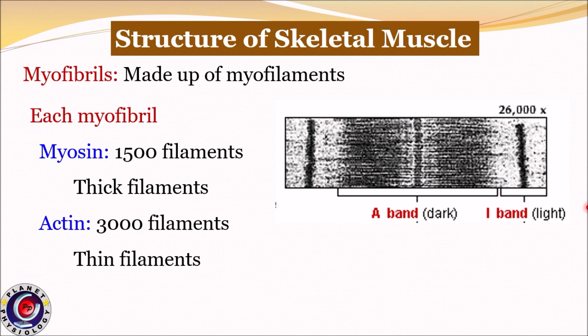In each myofibril there are about 1500 myosin filaments, also called thick filaments, and 3000 actin filaments, also called thin filaments. These filaments are responsible for the process of muscle contraction. These myofilaments are arranged in a regular manner within the myofibril, which forms alternate dark and light bands and hence gives the muscle its striated appearance.